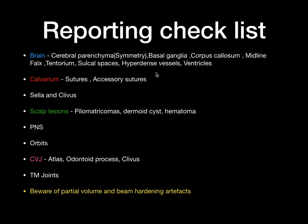Final reporting checklist: look at the brain — cerebral parenchyma, basal ganglia, corpus callosum, midline falx, tentorium, sulcal spaces, and hyperdense vessels in case of hyperacute strokes. Look at the ventricles. For the calvarium, look at the sutures — beware of accessory sutures which can be confused with fractures. Also assess the sella and the clivus.